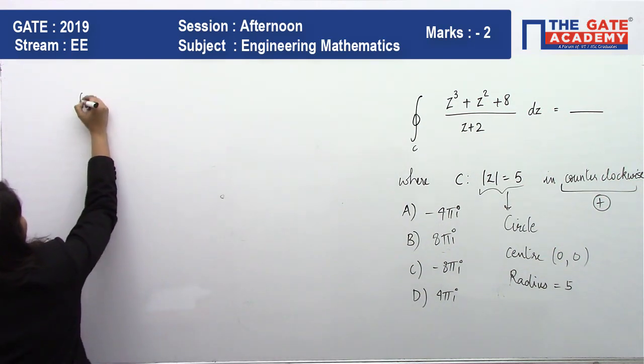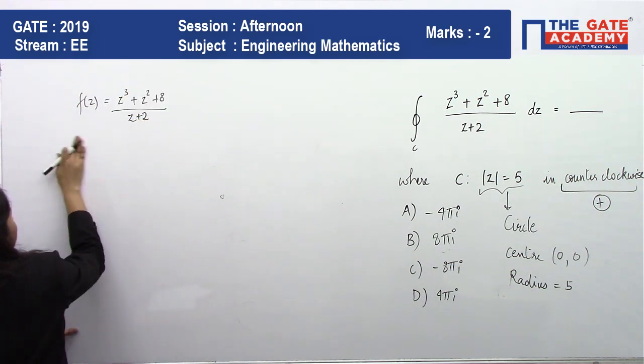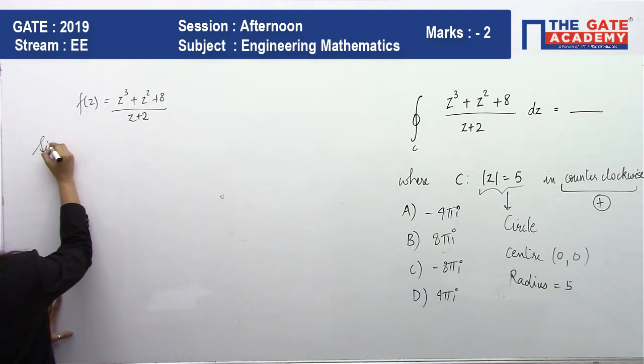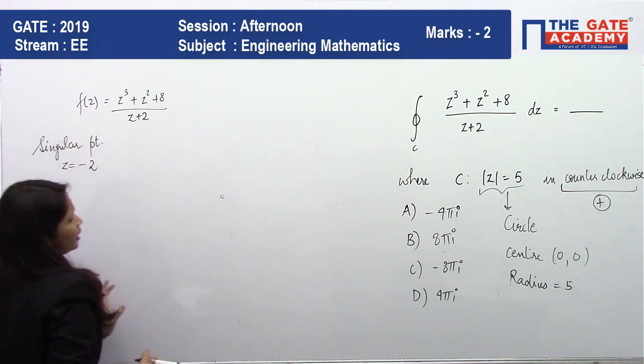If you look at this function f(z), this function has singular points or this function is not analytic at z = -2.